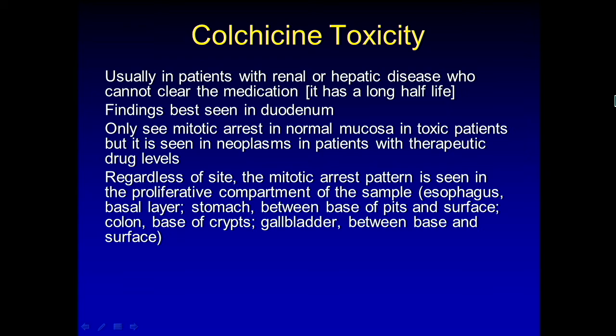The findings are best seen in the duodenum, presumably because it has the most turnover. The important thing is that you only see the cool mitotic arrest pattern in normal mucosa in toxic patients. But if a patient happens to have a neoplasm and is taking a therapeutic dose, you'll see just crazy stuff in the neoplastic process. Regardless of the site, you see the mitotic arrest pattern in the proliferative compartment.